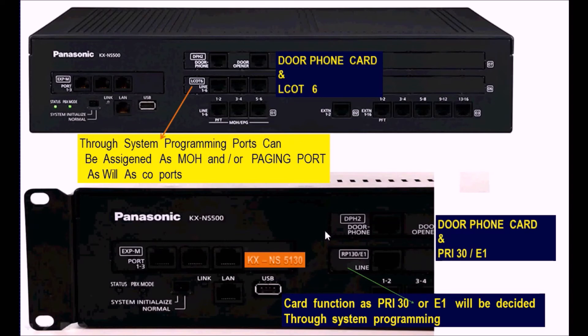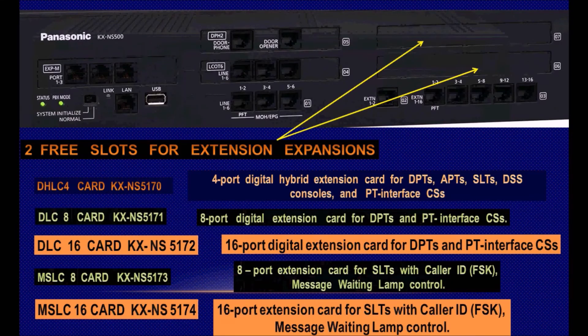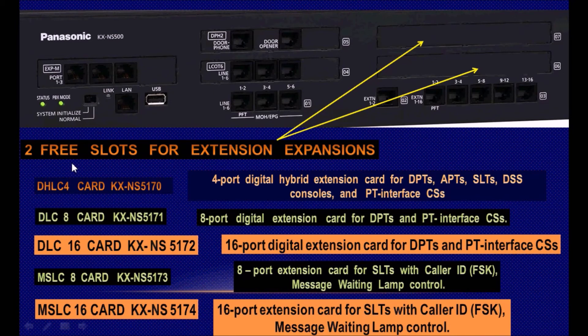So you can use one digital trunk card or one analog trunk card, and only one door phone card. These two slots, numbers 6 and 7, are for extension expansion, and there are several types of expansion cards which can be used with this system, with either the main unit or expansion unit.